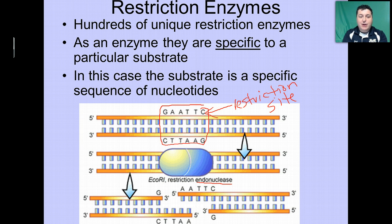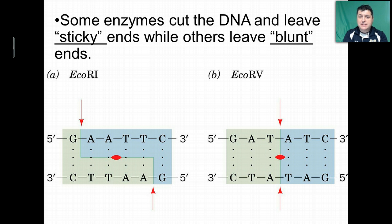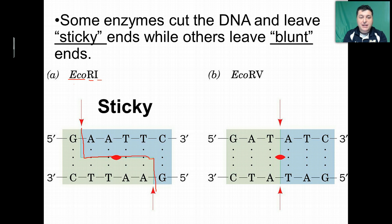In this case, our enzyme EcoRI is cutting the DNA at the sequence GAATTC, and it provides a specific cut. Some enzymes cut the DNA and leave sticky ends, while others leave what we call blunt ends. EcoRI produces a sticky end — it recognizes a specific sequence, cuts the covalent bonds on the DNA backbone, and the hydrogen bonds fall apart, leaving overhanging bases that are unmatched. That's really useful if we're wanting to stick two pieces of DNA together.